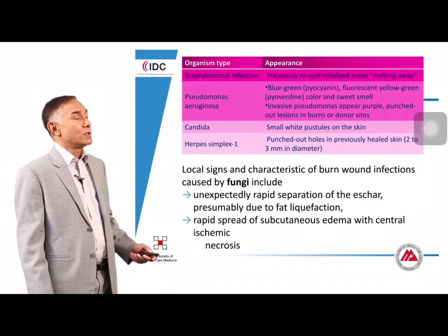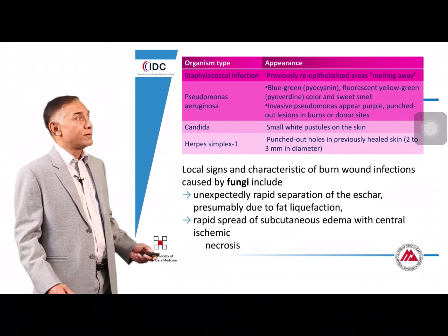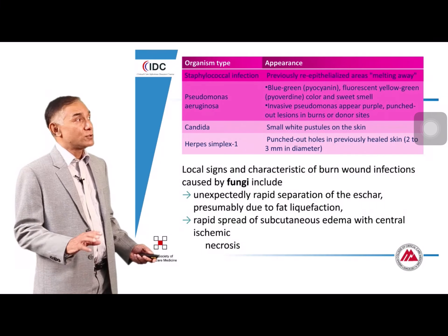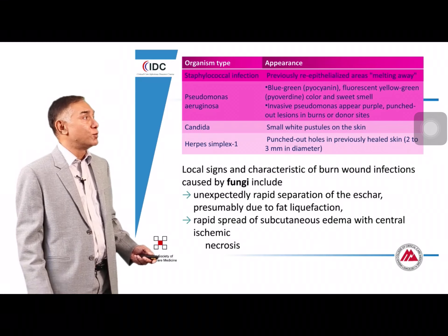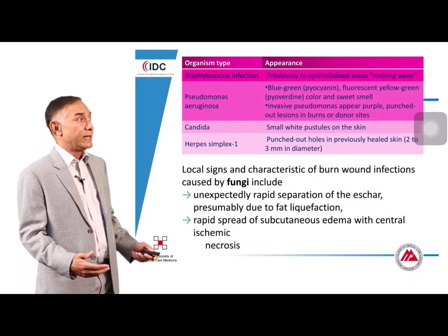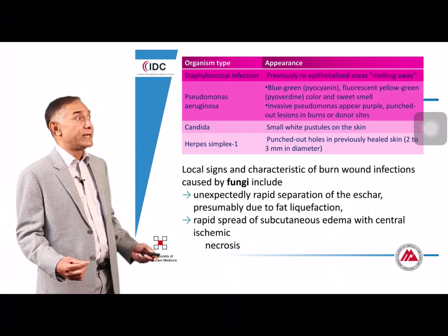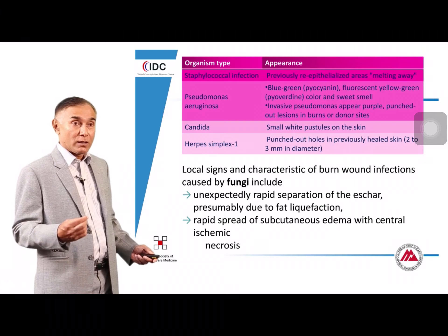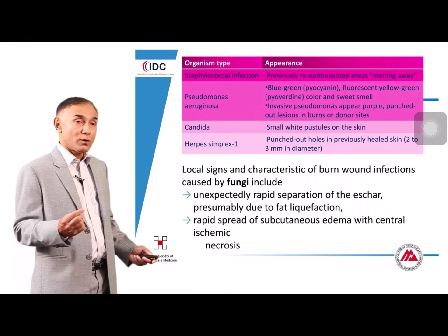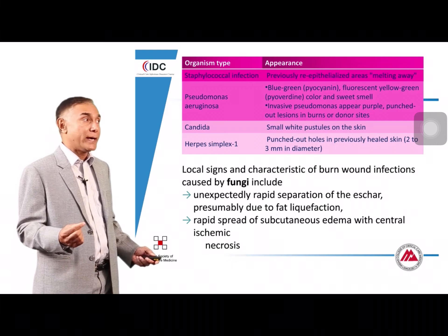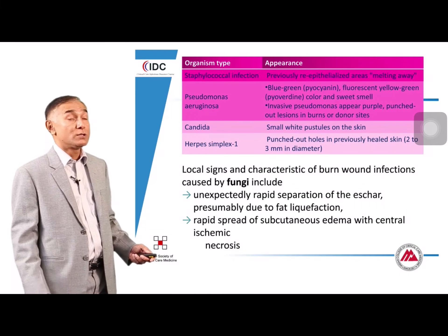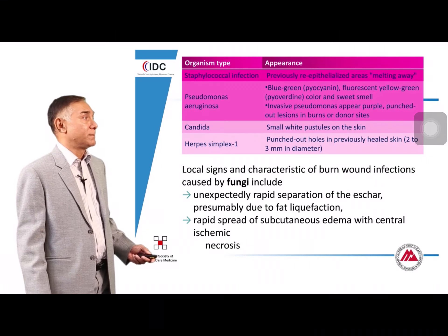Some clinical clues can suggest the causative organism: Staphylococcus aureus can cause a so-called melting away of the burn wound; Pseudomonas aeruginosa produces a blue-green appearance and an unusual smell; Candida causes small white pustules; and Herpes simplex can cause punched-out holes in previously normal skin.